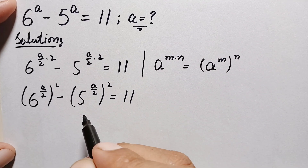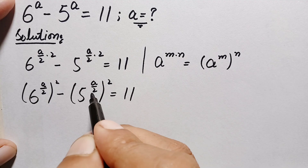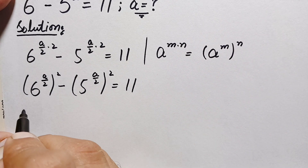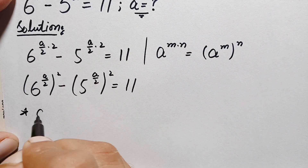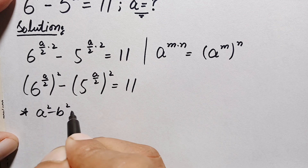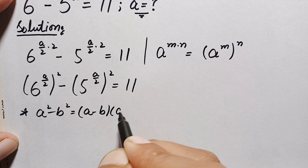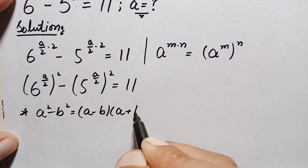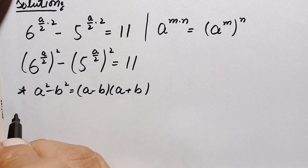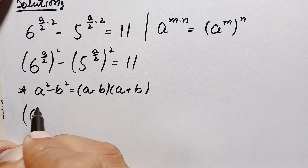Looking at the left hand side, this is in the algebraic form a squared minus b squared. So here we will use the algebraic identity: a squared minus b squared is equal to (a minus b) times (a plus b).